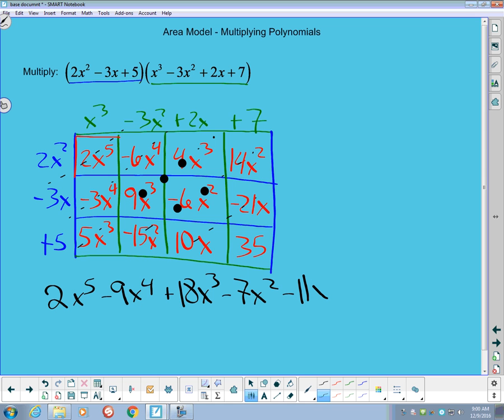This one, the 10x minus the 21x, gives me -11x, and then I've got +35 at the end. That is the simplified product in standard form of the problem I was asked to do.